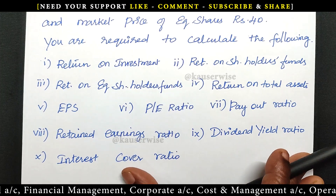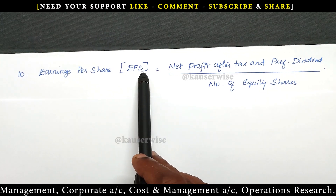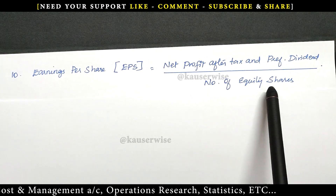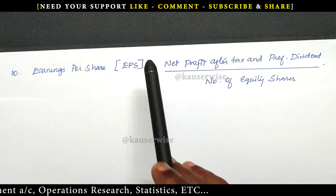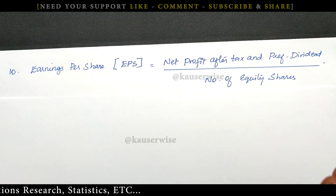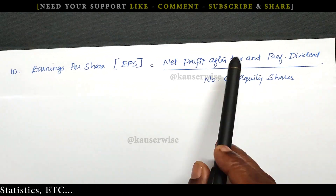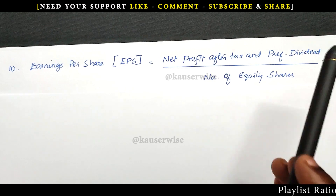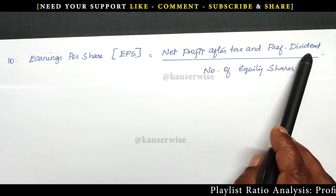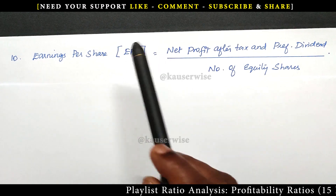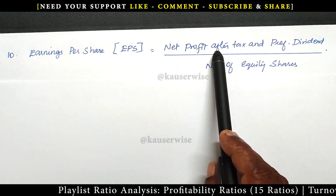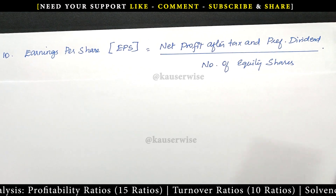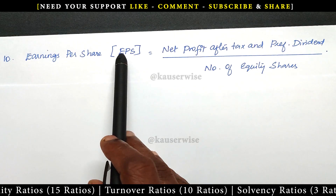Number one: EPS — EPS stands for Earning Per Share. See the formula for earning per share: that is net profit after tax and after preferential dividend divided by number of equity shares. Earning per share equals profit available to equity shareholders. How to calculate profit? Profit after interest and after tax — the remaining profit is available to shareholders. If there is any preferential shareholder in the capital structure, then you have to subtract preferential dividend. The residual profit is available to equity shareholders. So net profit after tax and preferential dividend divided by number of equity shares gives you earnings per share.